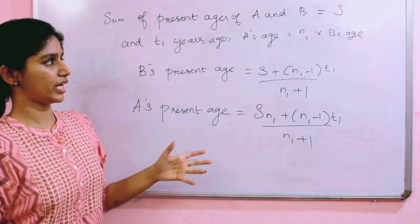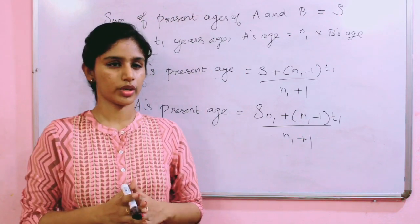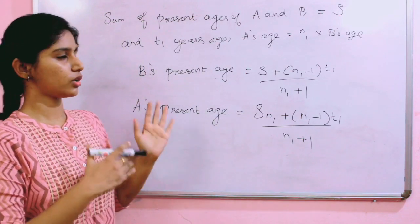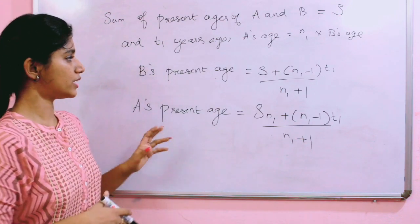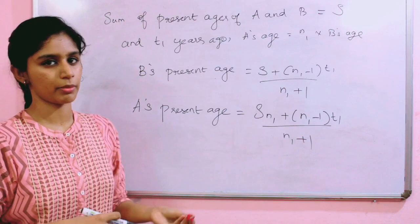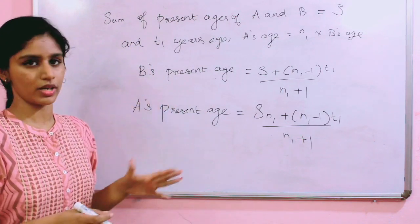Now, sum of the present ages of A and B. Rules 4 and 5 deal with sum - what is the past sum and future sum? In these cases, you will see the sum and difference concept.